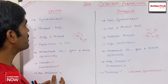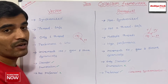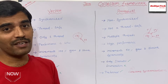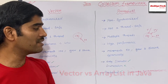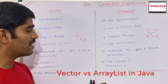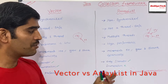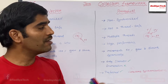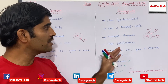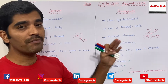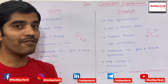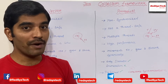Vector is a legacy one. Basically, we don't prefer to use Vector over ArrayList. The reason is that ArrayList is preferred because by default ArrayList is not thread safe, meaning not synchronized. So by default, the performance will be better.